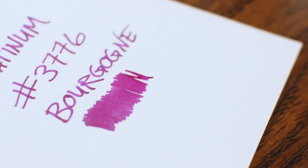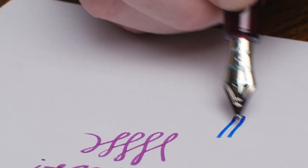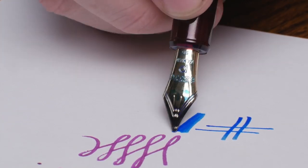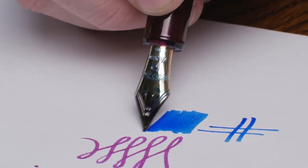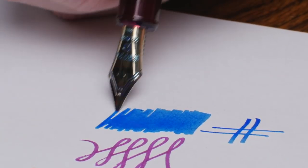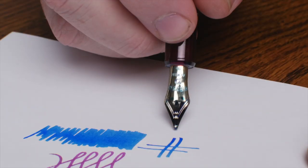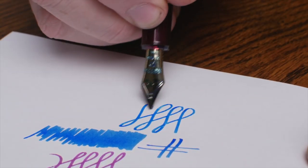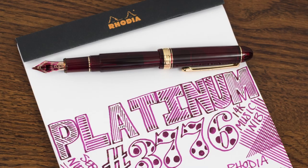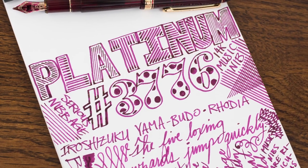The good part about the slightly dry flow is that it helps bring out any shading an ink might have. It also gives the user the ability to increase the flow, which is much easier than trying to reduce it if it was overly wet to begin with. Out of the box, the music nib was as smooth as butter on a sheet of glass and performed exactly as you would hope.